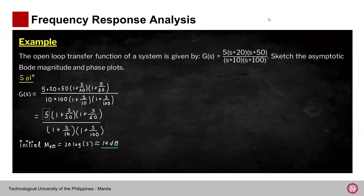Since this is purely constant, we compute the initial MdB as 20 log(5) ≈ 13.98, approximately 14 dB. So the plot will start at 14 dB.